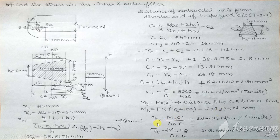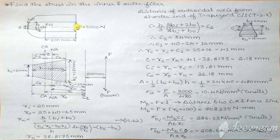Sigma Bi, the bending stress at the inner fiber, is given by MbCi / (AeRi), which is tensile in nature. Sigma B0 is MbC0 / (AeR0). Due to the applied force, there is a tendency for the outer fiber to compress, so it is compressive stress at the outer fiber. At the inner fiber the fiber tends to expand due to the applied 5000 N load, so it is tensile in nature.